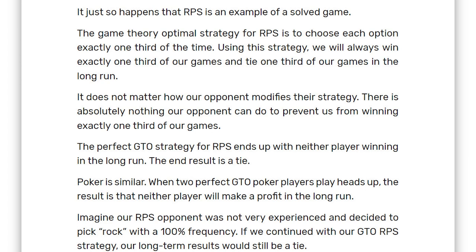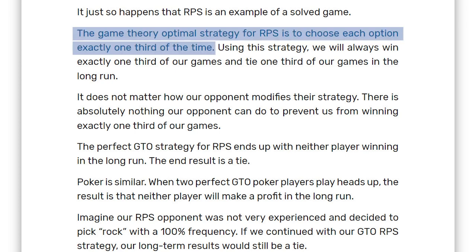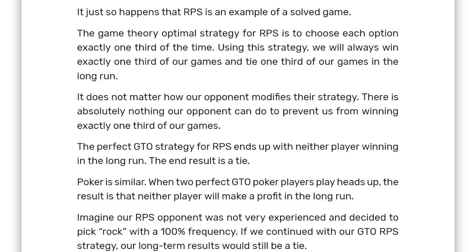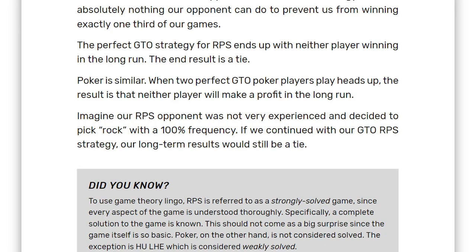It just so happens that RPS is an example of a solved game. The game theory optimal strategy for rock paper scissors is to choose each option exactly one third of the time. By using this strategy, you'll always win exactly one third of your games and tie one third in the long run. It does not matter how your opponent modifies their strategy — there's absolutely nothing they can do to prevent you from winning exactly one third of your games.